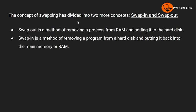The concept of swapping is divided into two operations: swap in and swap out. Swap out is a method of removing a process from RAM (main memory) and adding it to the hard disk (secondary memory). Swap in is the operation of bringing a process from secondary memory back into main memory.